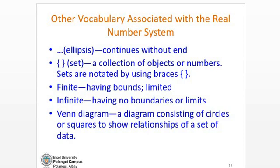And a Venn diagram, which is a diagram consisting of circles or squares, are used to show relationships of a set of data.